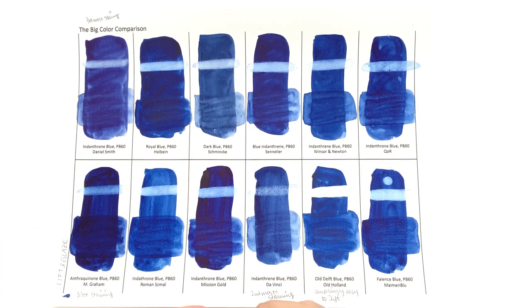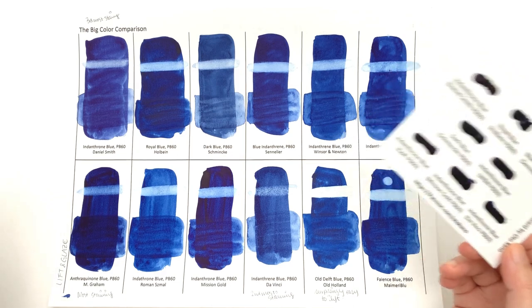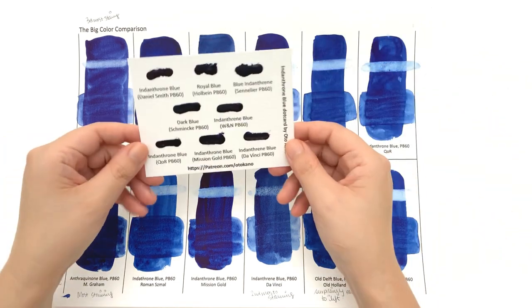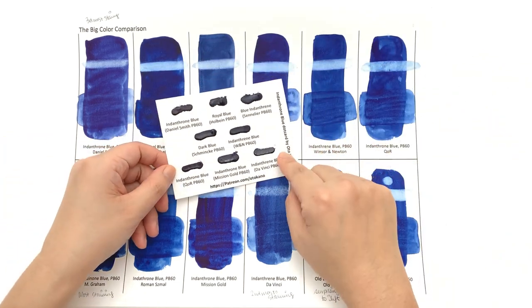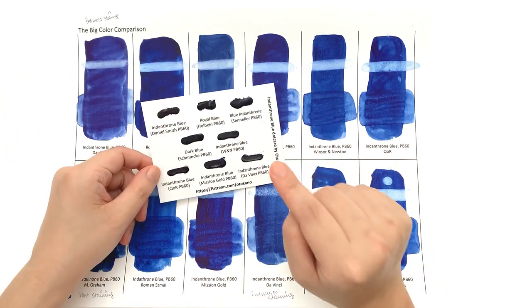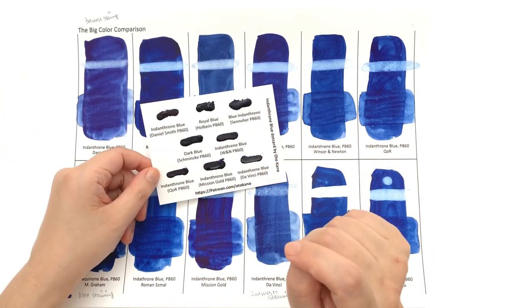If you are interested in trying Indanthrone Blue, I do have a dot card that has eight of these colors that you can sign up to receive over on my Patreon. That's patreon.com/ottocarno.